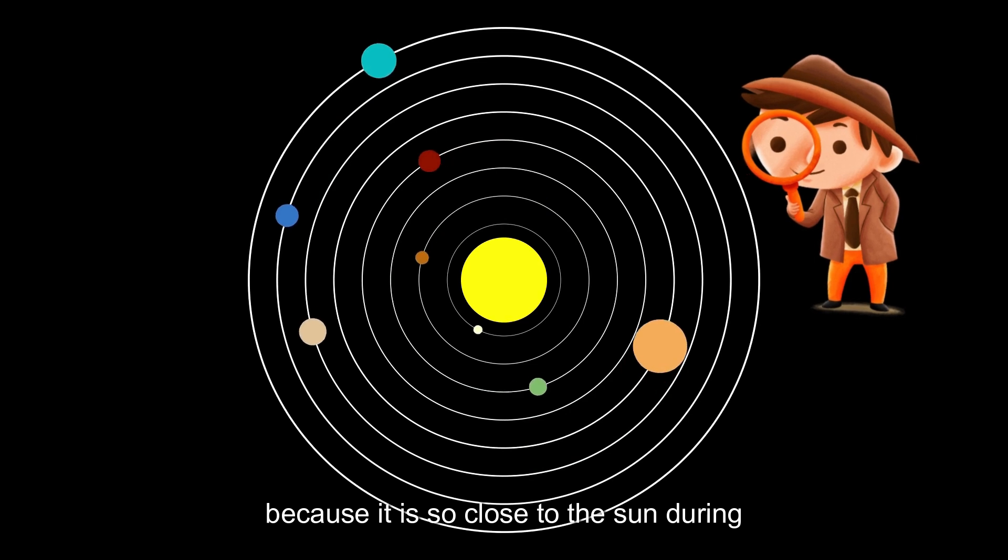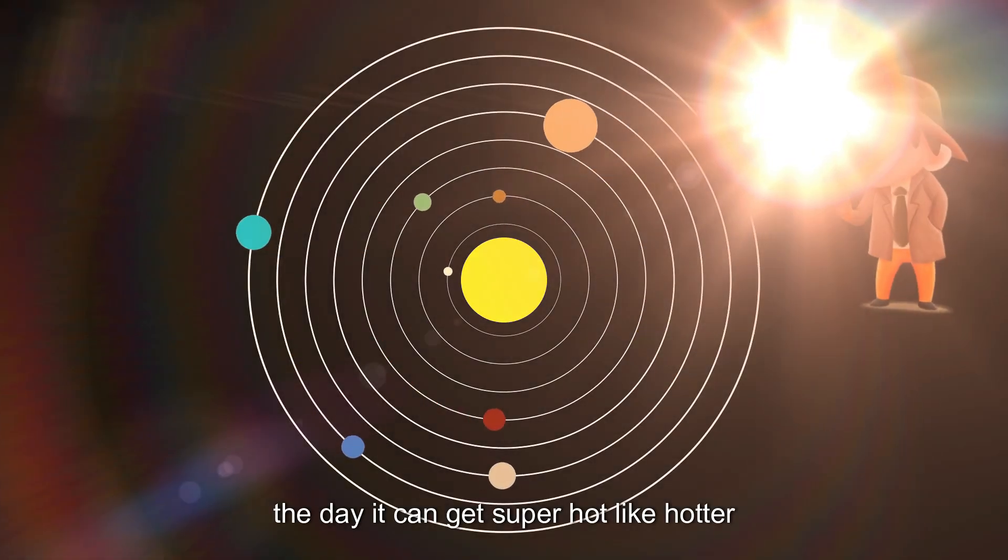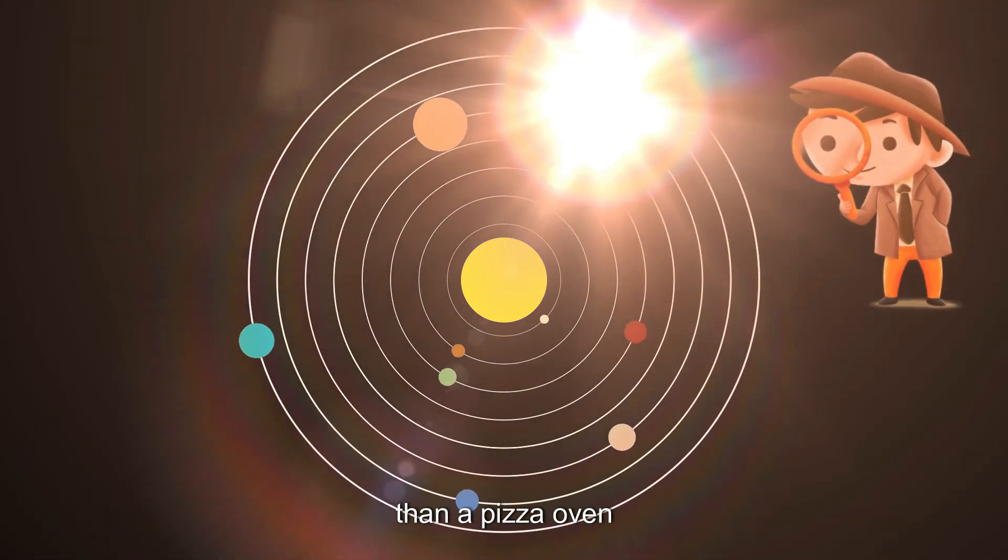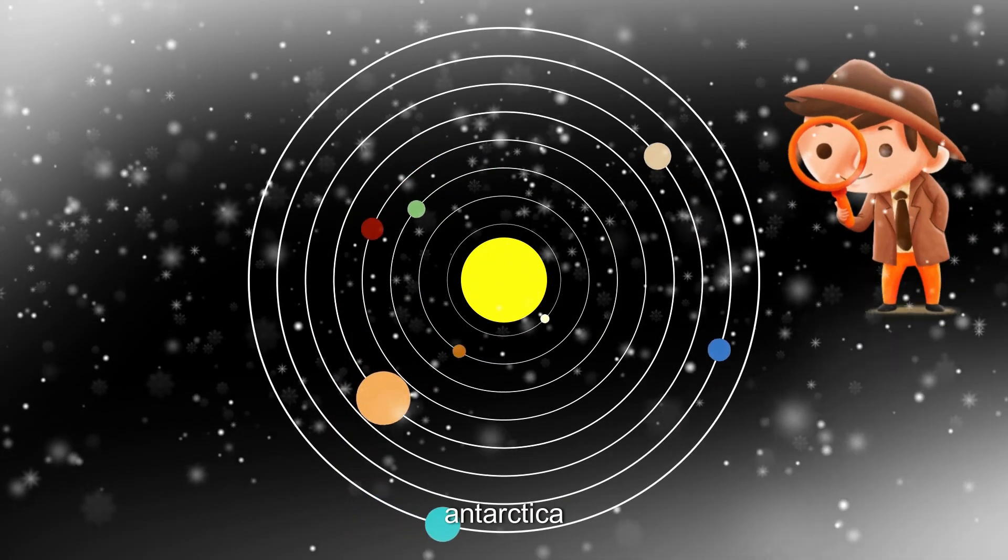Because it is so close to the Sun during the day, it can get super hot, like hotter than a pizza oven. And at night, Mercury can get so cold, it's colder than Antarctica.